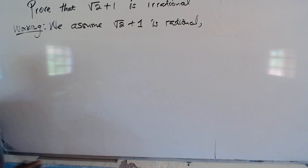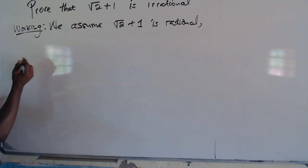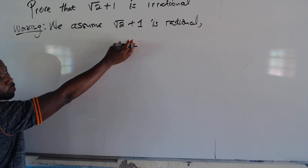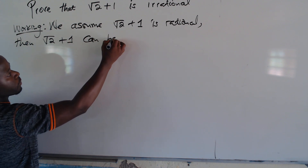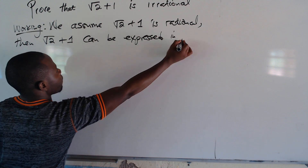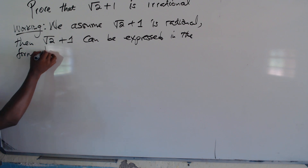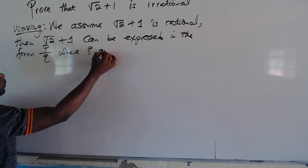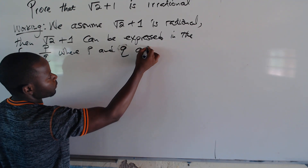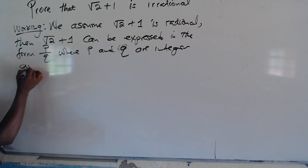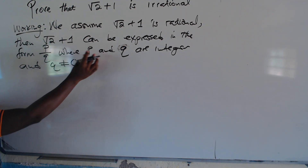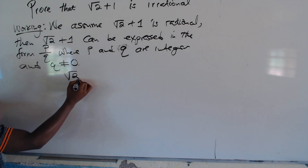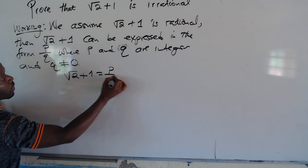Since we are making this assumption, we can use the definition for rational numbers. We assume that square root of 2 plus 1 is rational, so square root of 2 plus 1 can be expressed in the form P over Q, where P and Q are integers and Q is not equal to 0, using the definition of rational numbers.